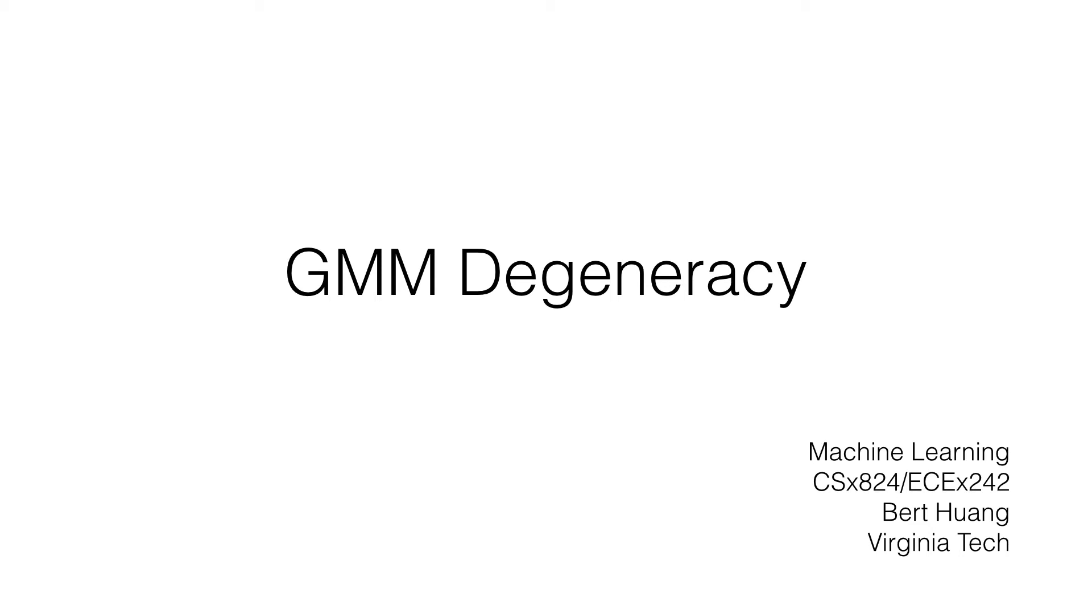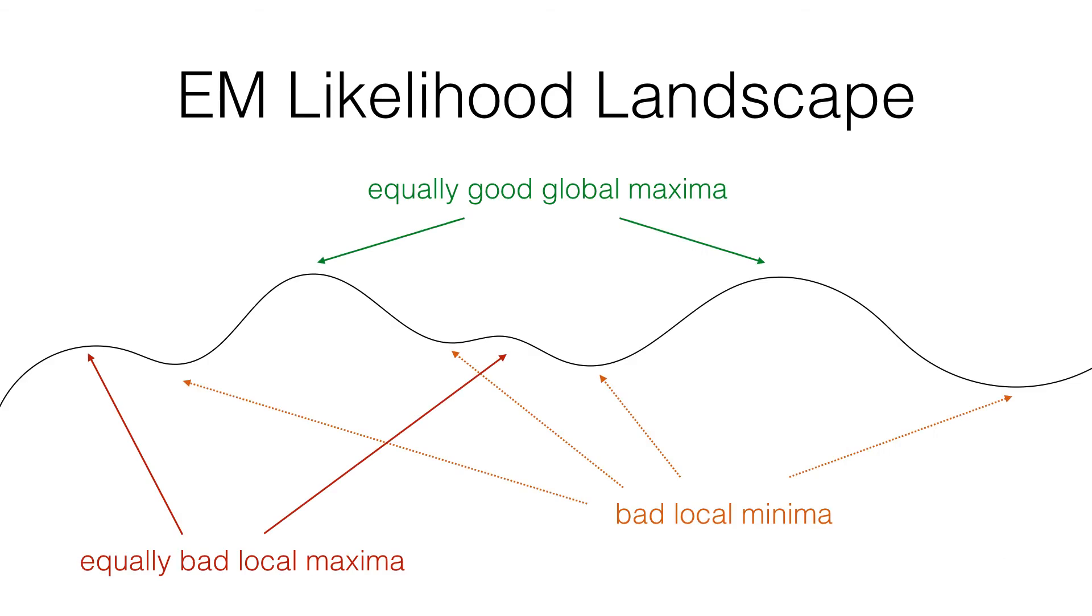So this is a quick video to discuss a degeneracy in Gaussian mixture models that actually is a correction to a statement I made in one of the previous videos. So I made the claim in one of the previous videos that the EM likelihood landscape has a bunch of equally good global maxima and I talked about how there is equally bad local maxima and possibly bad local minima.